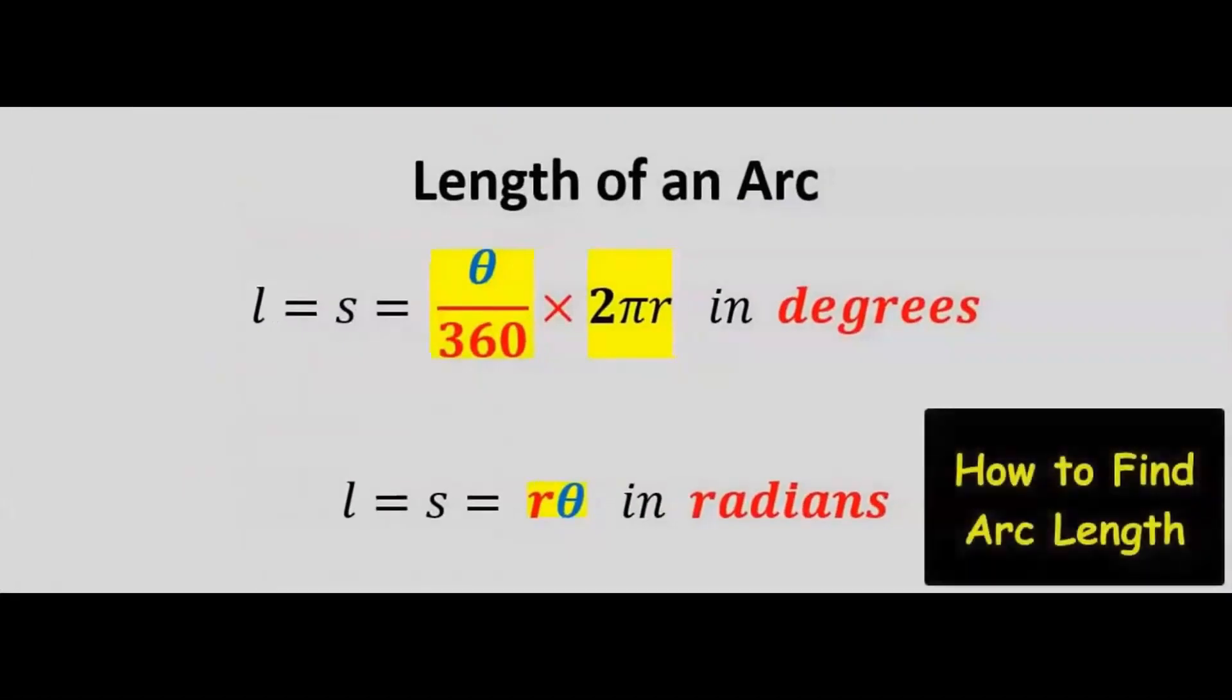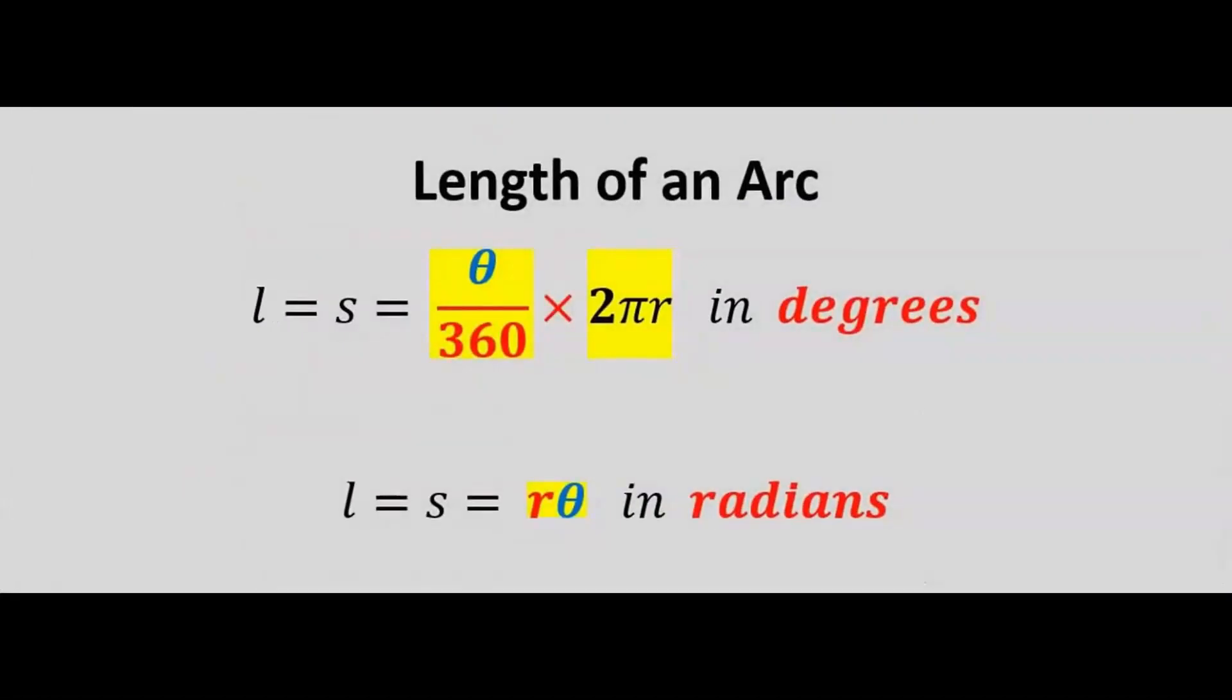Let's consider how to calculate the length of an arc. If the central angle is in degrees, then we're going to use this formula. But if the central angle is in radians, then we're going to use this formula.